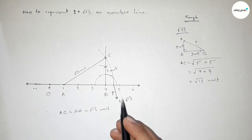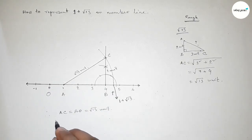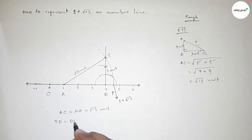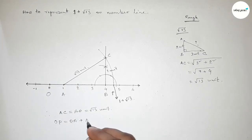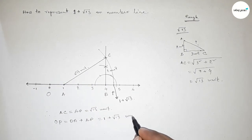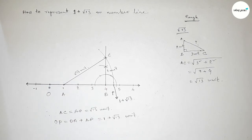The length OP equals OA plus AP, which is 1 plus root 13 units. So that's all. Thanks for watching. If this video is helpful to you, please share it with your friends. Thanks for watching.